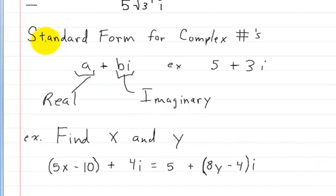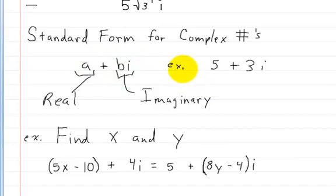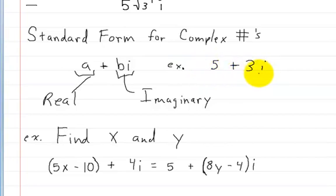This is the standard form of complex numbers. You write it as a plus bi. An example is 5 plus 3i. The first portion is the real part, and the second portion is the imaginary part.